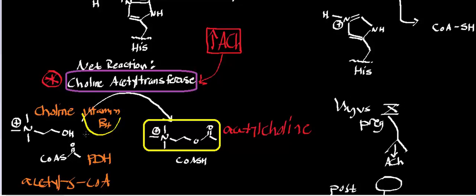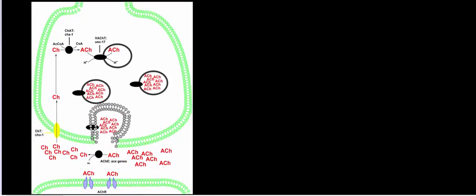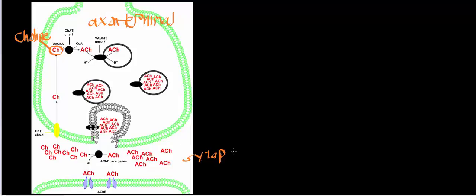Choline acetyltransferase is made significantly in cholinergic neurons, and there's a huge interplay between choline acetyltransferase and acetylcholinesterase. In the axon terminal, choline reacts with choline acetyltransferase and acetyl-CoA. The enzyme condenses the acetyl part of acetyl-CoA with choline to make acetylcholine.